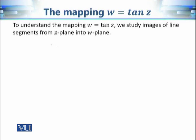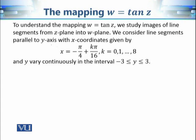We are going to choose some subsets in the z-plane and study their images under tan(z) in the w-plane. Specifically, we will choose line segments in the z-plane and study their images in the w-plane. The line segments we are going to use are basically those parallel to the imaginary axis, or the y-axis, and they will be defined using their x-coordinates.